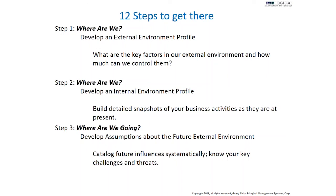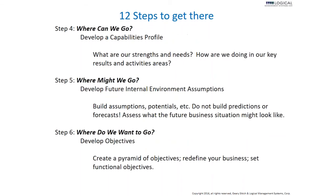The third step is to look at where you want to go — develop assumptions about the future external environment, catalog influences, and look at how your CSR program fits into the context of your business operations, knowing your challenges, threats, and risks. The fourth step is to develop a capabilities profile — know and understand your strengths and needs through a SWOT analysis: strengths, weaknesses, opportunities, and threats — and start building those into your business activities and social responsibility program.